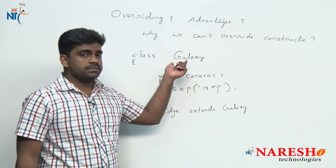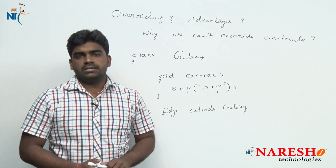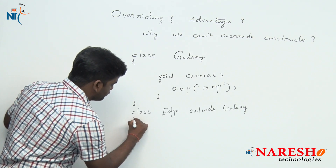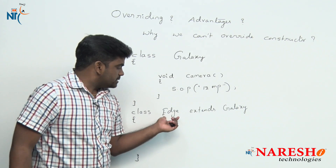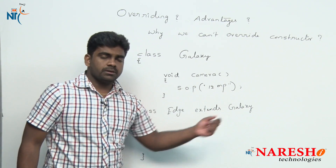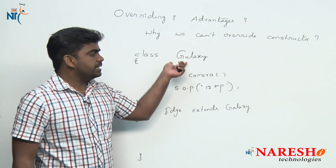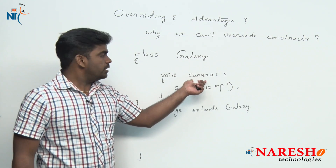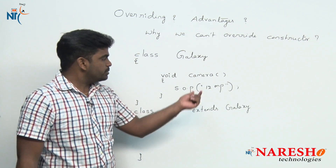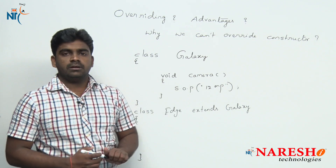Because so much is already implemented in Galaxy, and we are just releasing the next version — we already discussed what inheritance is. So here, Edge mobile is extending from GalaxyMobile. So automatically, all the functionalities available in GalaxyMobile will come to Edge mobile. Functionalities means — for example, camera — automatically it will come to here.